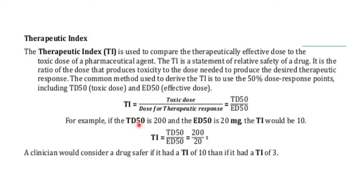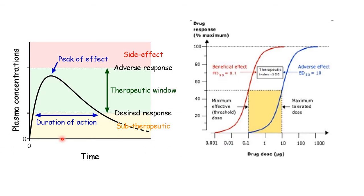For example, if the TD50 of a compound is 200 mg and the effective dose is 20 mg, then the therapeutic index is 200 divided by 20, which equals 10. This means the drug must be given 10 times the effective dose to reach TD50, so it is considered a safe drug. Diagrammatically, the drug concentration should remain between the sub-therapeutic and toxic concentrations — this range is called the therapeutic window. The therapeutic index is the ratio of TD50 to ED50, shown graphically on a drug dose versus drug response plot.